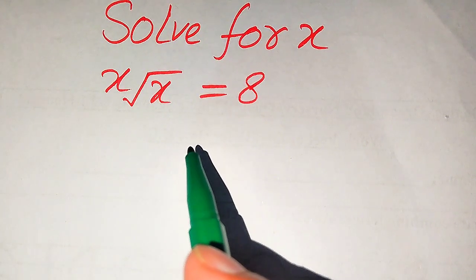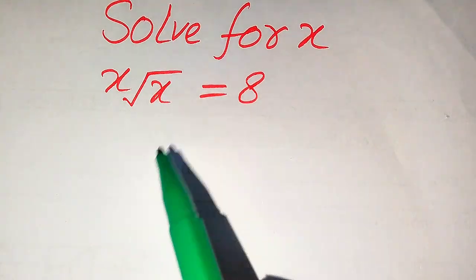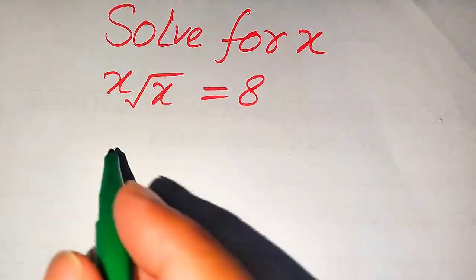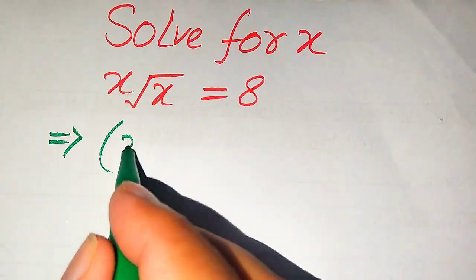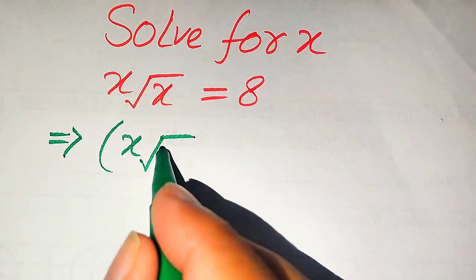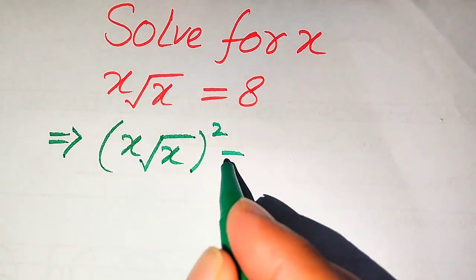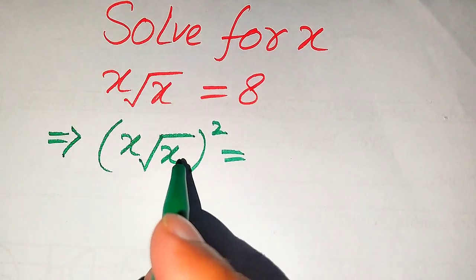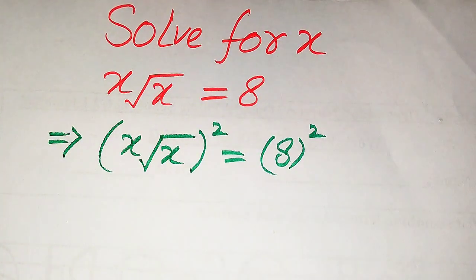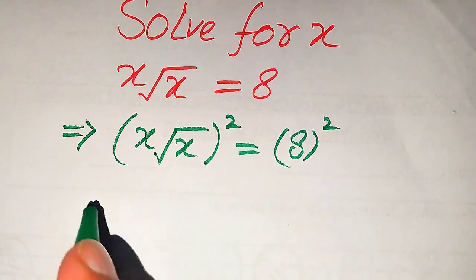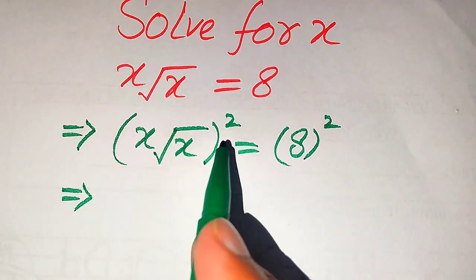The very first thing we are going to do is remove this square root sign from the left hand side. In order to remove this square root sign, we need to take squaring on both sides. So when we take squaring, it will be written as x times square root of x, whole squared, is equals to 8 squared.